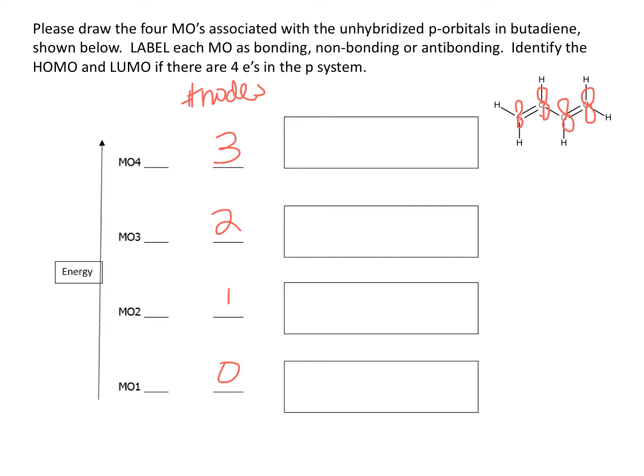So let's start with our lowest node, or our lowest MO rather. We are going to have four atoms, and we would like to have no nodes. So that means each of the unhybridized p orbitals is going to be in phase, meaning I will have the shaded region on top for all of them, and unshaded on the bottom.